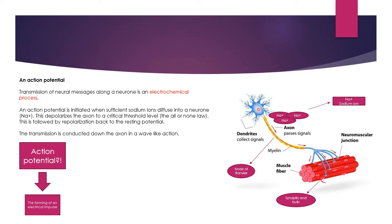Down at the bottom we can see the synaptic end bulb, which we'll discuss later with regards to muscular contraction. Looking at the left-hand side, we see the key term action potential, which means the forming of an electrical impulse. For that to happen, we need the release of sodium ions — Na+ — and these cause an action potential. Once this happens, the action potential travels down the axon all the way to the neuromuscular junction, jumping along in a wave-like motion.